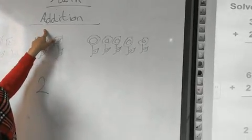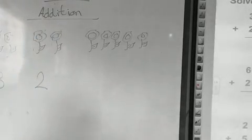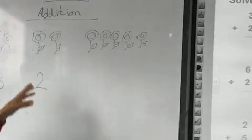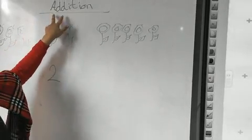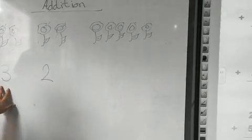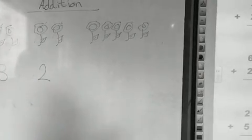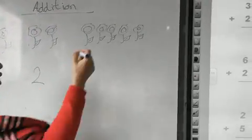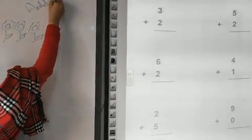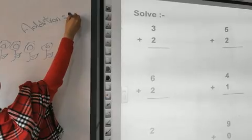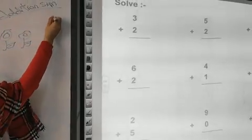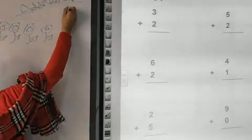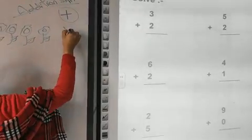Now we will use addition — our lesson — addition, to answer this question. Addition means to add. Now I add two more flowers, so we will use addition. We will add. I have three and add two more flowers, so we will use the addition sign. What is the addition sign? The addition sign is like a sleeping line crossed with a standing line. It's called plus.